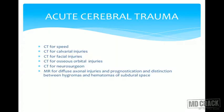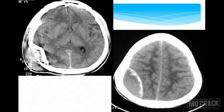In acute cerebral trauma, CT is the modality of choice — it is fast and excellent for evaluating calvarial injuries, facial injuries, and osseous orbital injuries, all important for neurosurgical planning. MRI helps in evaluating diffuse axonal injuries, which present as microbleeds in specific areas of the brain.